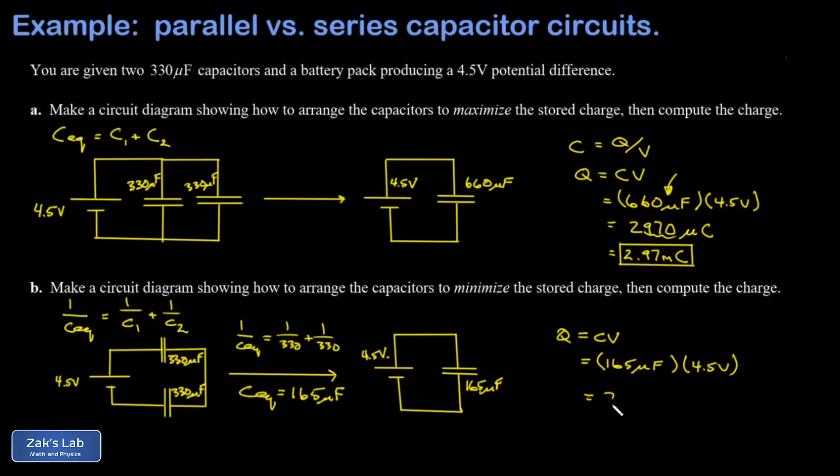When I run the numbers on this, I get 742.5 microcoulombs. Again, we might want to express that in terms of millicoulombs instead. I'm going to round to three sig figs as I go, so I'm going to call it 0.743 millicoulombs. And we're done.